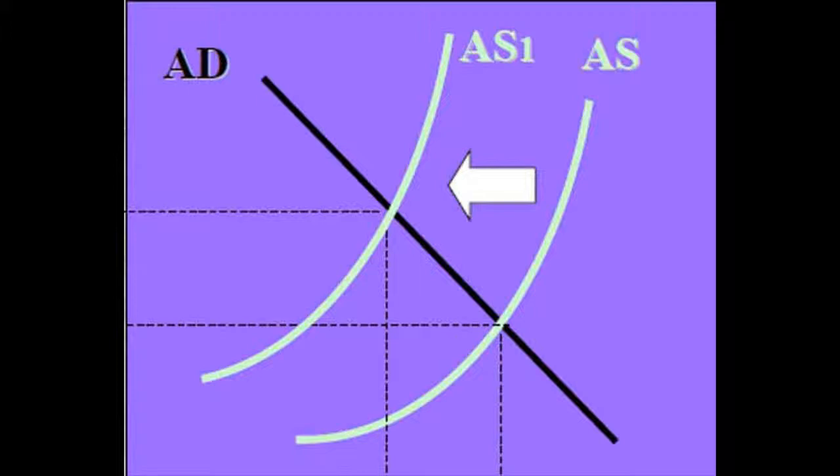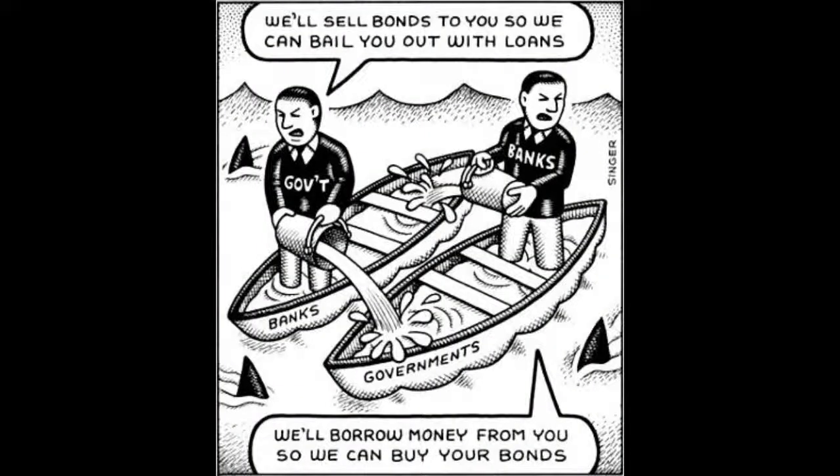With aggregate supply, when it decreases it is shifted leftward, which increases price levels and decreases output. As previously mentioned, this is how governments are able to keep our inflation rate in check. By decreasing the government spending portion of aggregate demand, they can shift the curve leftward, which decreases price levels.